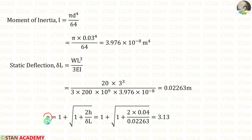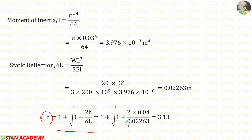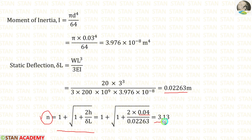Now let us calculate the load factor N. The formula is 1 plus root of 1 plus 2H by delta L. Applying the values: the height of the fall is 0.04 meter and delta L is equal to 0.02263 meter. After applying, we get N equal to 3.13.